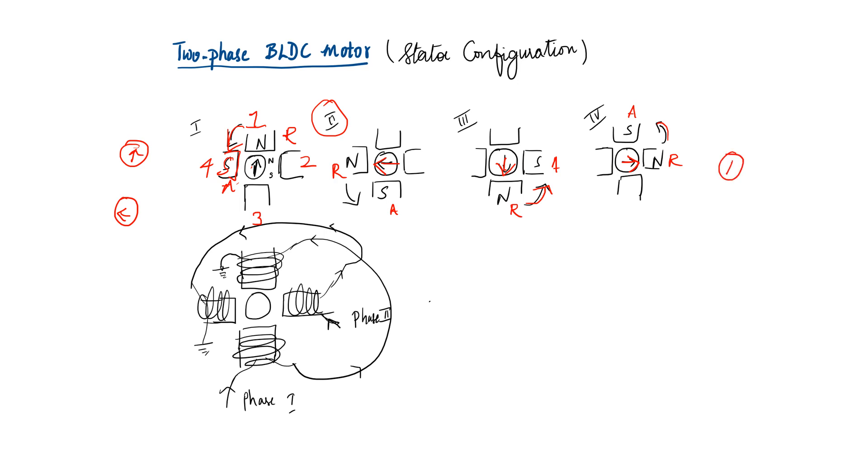So the rotor would become like this, which is nothing but the same position that we saw in the stage one. So it just takes four steps or four stages for the stator to come to its original position using this two pole rotor and two phase BLDC.